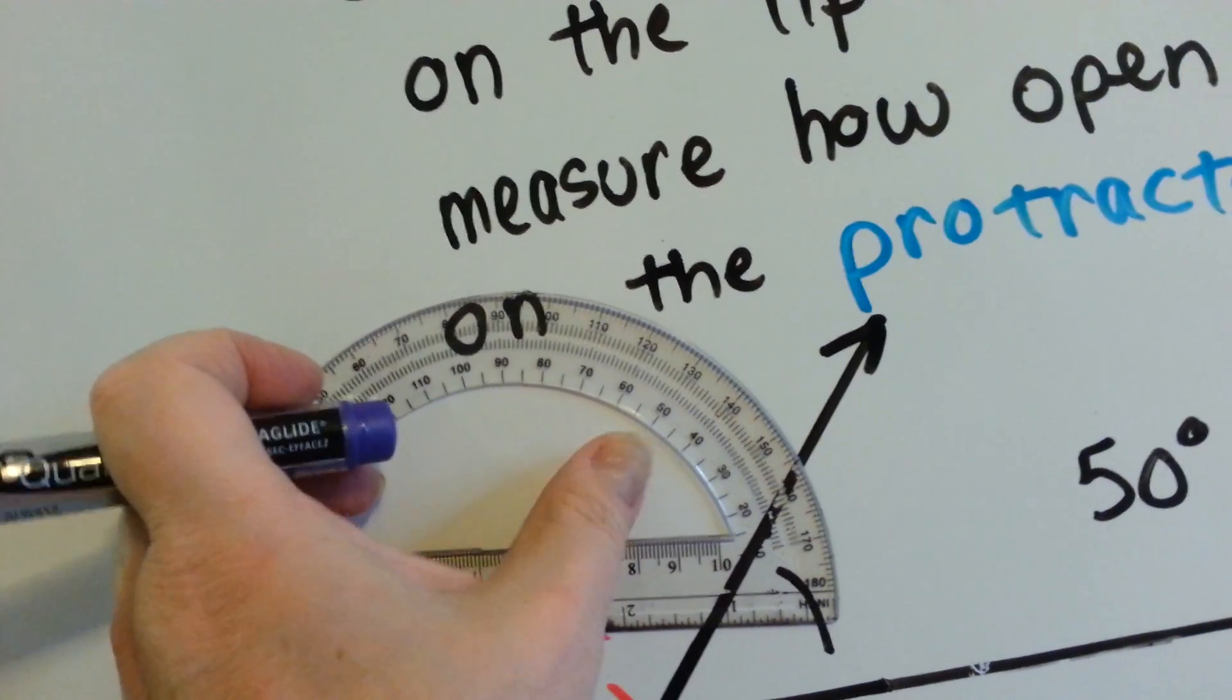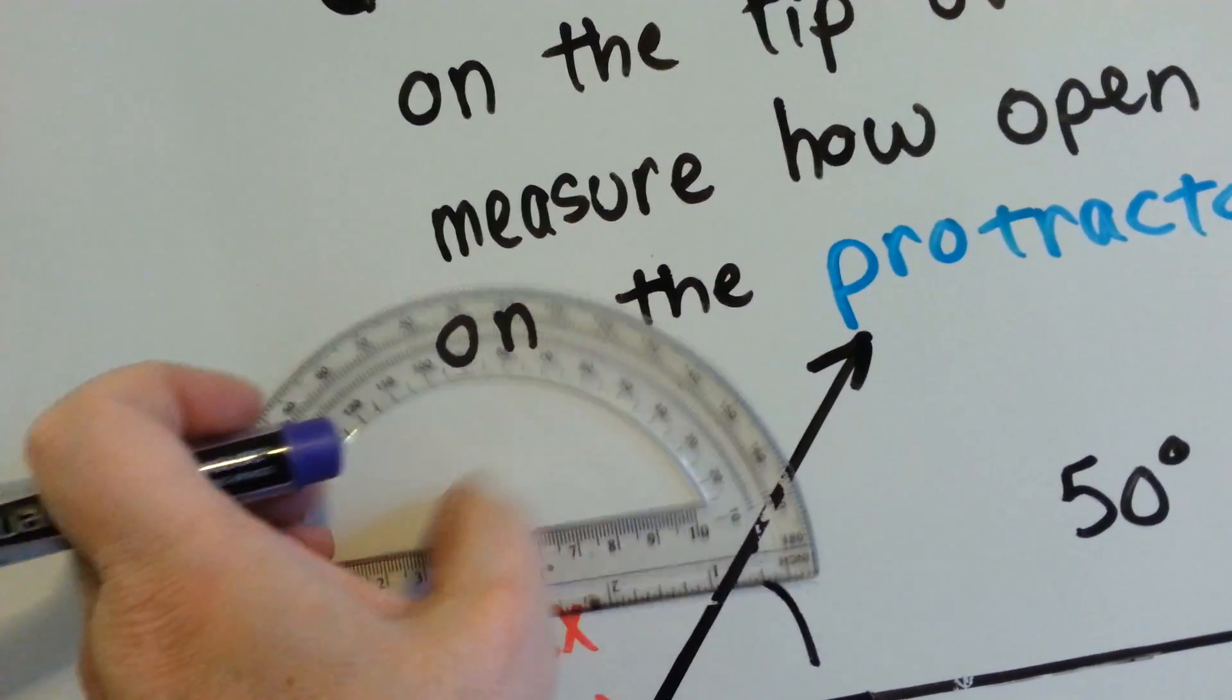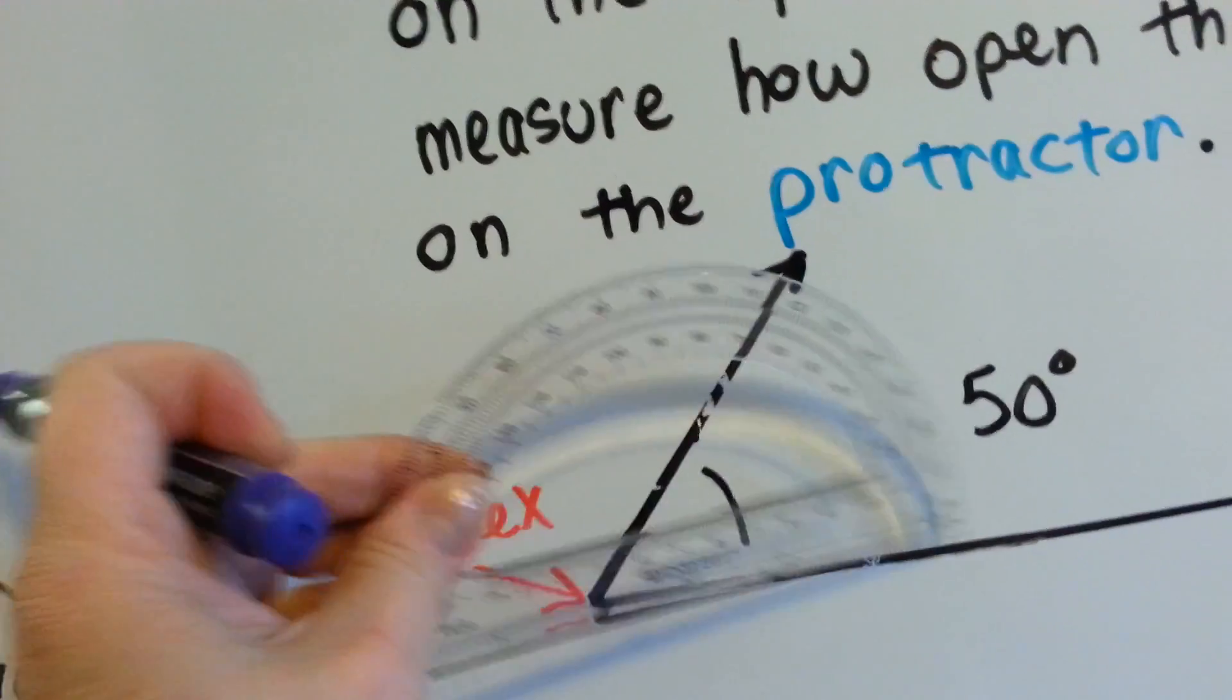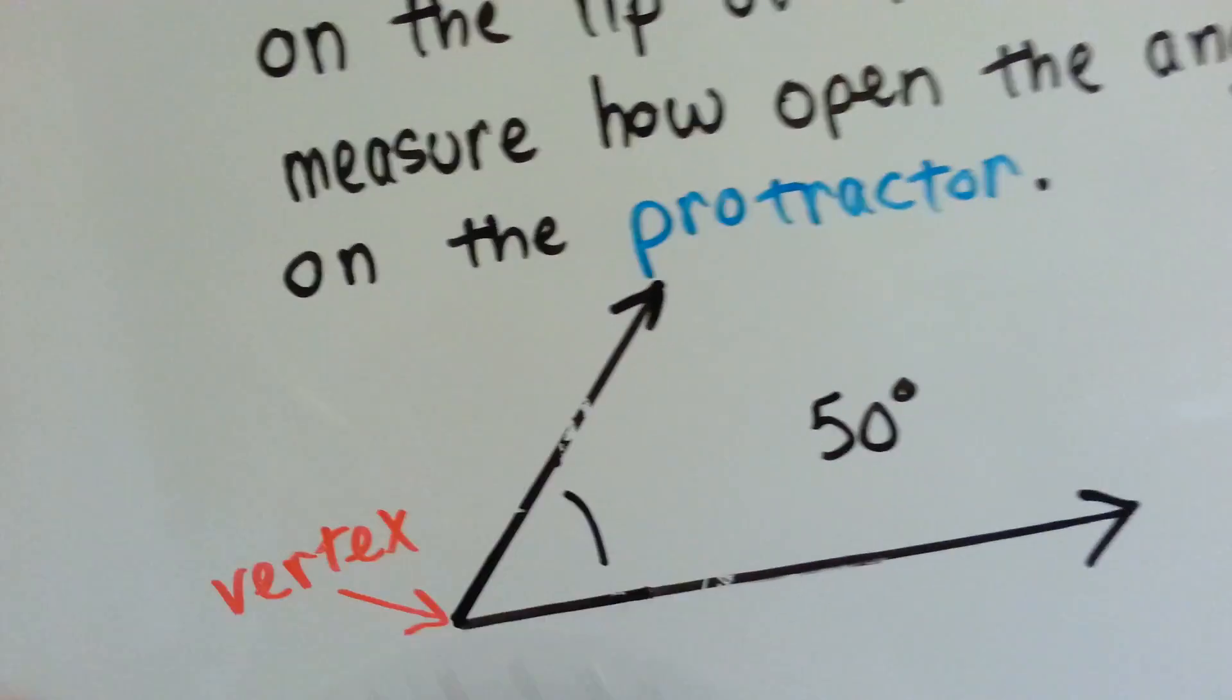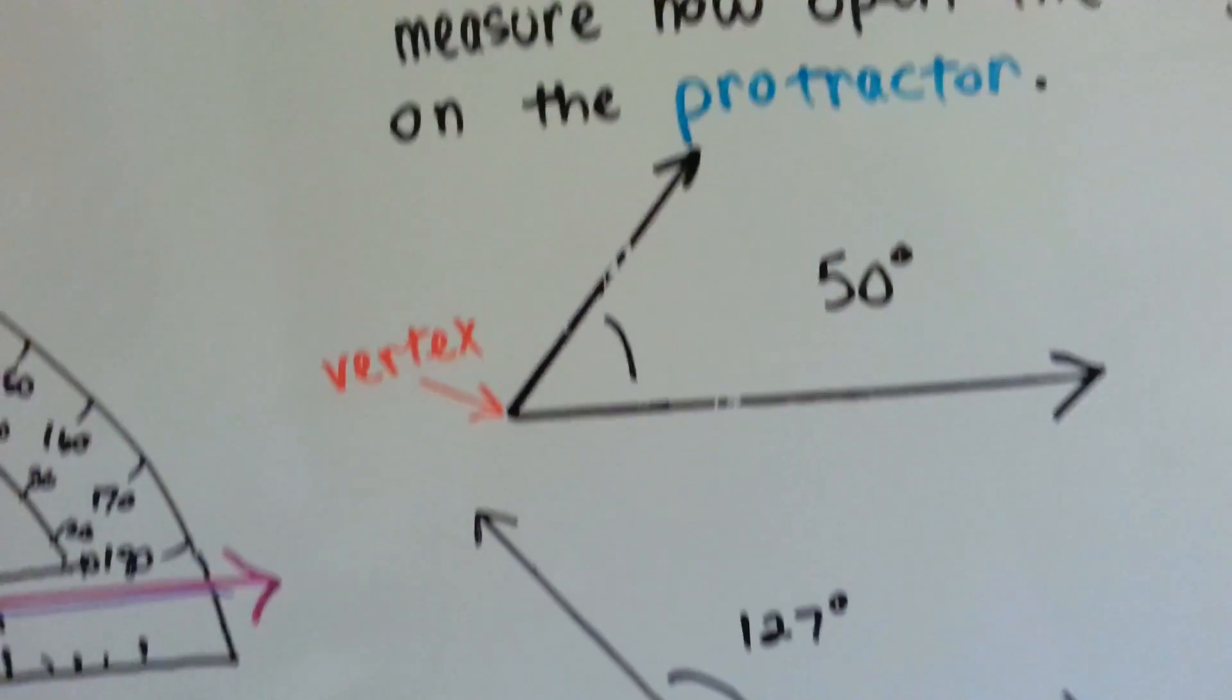So if we line this up, you can see that it lands on 50 and we know it's a 50 degree angle.